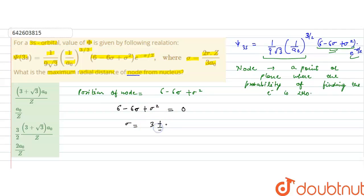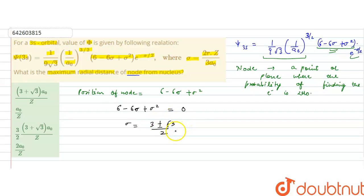We get two roots of sigma: 3 + √3 and 3 − √3, divided by 2. So these are the two nodes. We have been asked the maximum radial distance, so the maximum radial distance corresponds to sigma = (3 + √3) / 2.